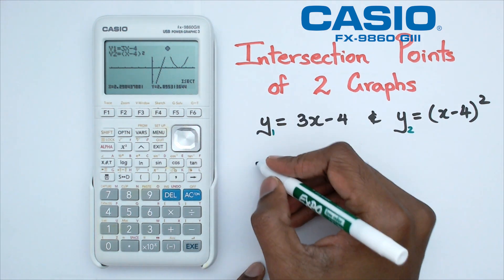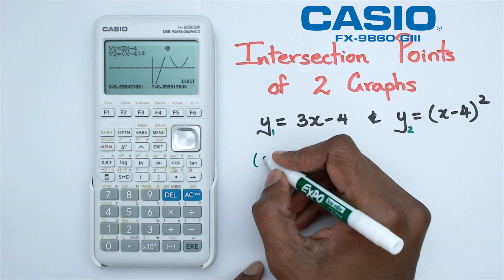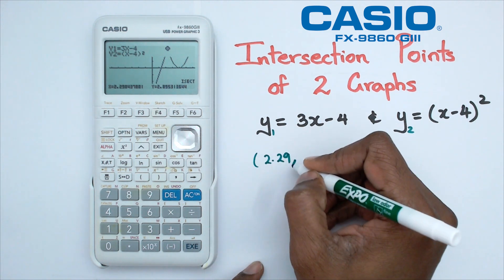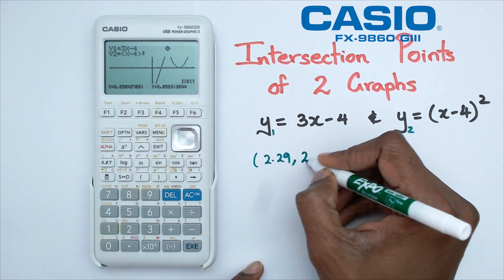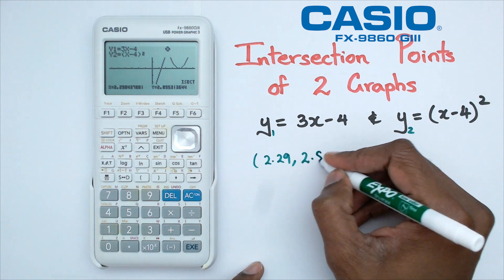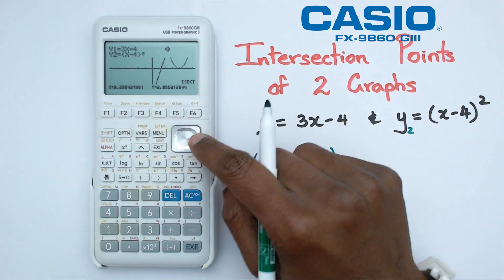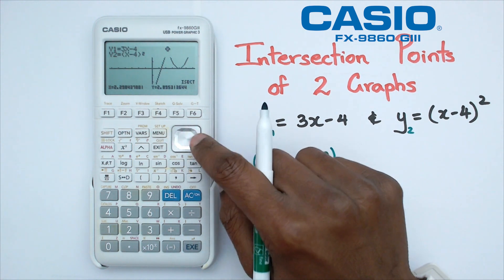And so our first point that we have for intersection is 2.29, probably should have rounded that up, but that's alright. And then we've got 2.89. Now I'd like to figure out if there's a second point, and the way I'm going to do that is by pressing the arrow buttons.